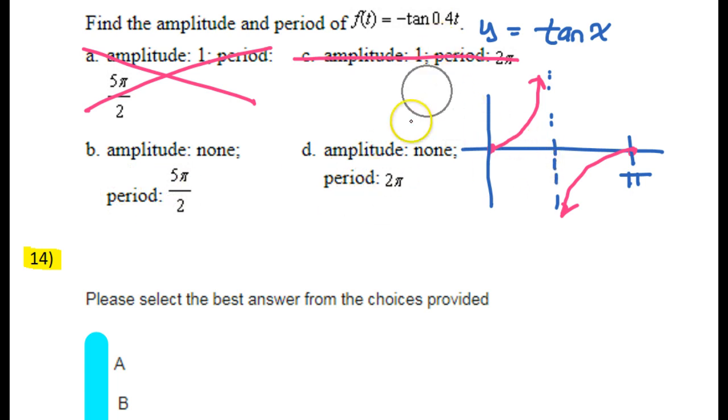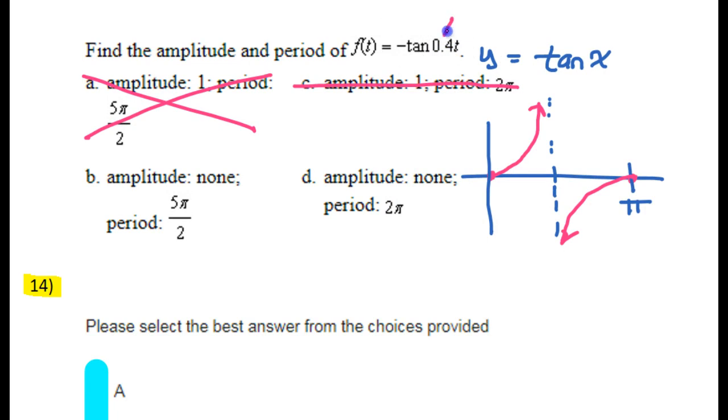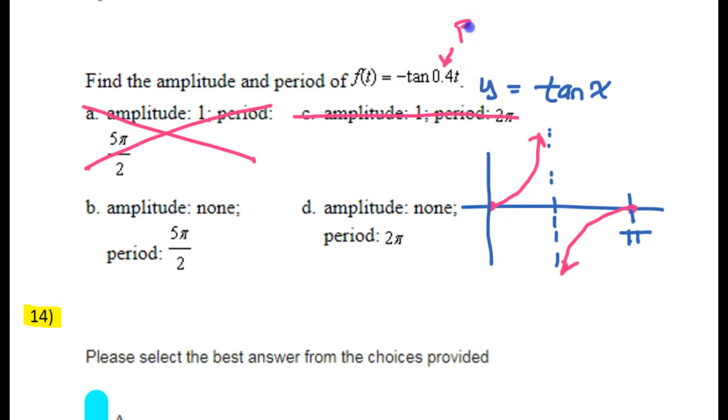Now, this function has a b value of 0.4. That is going to affect the period.